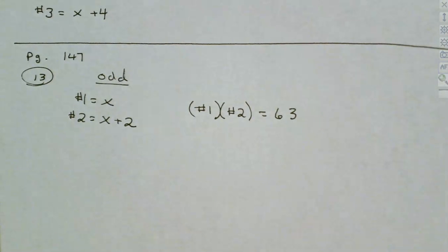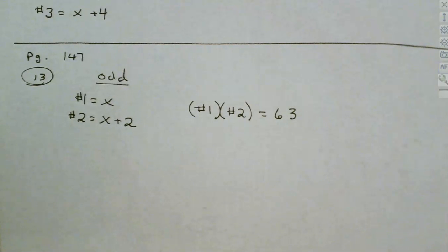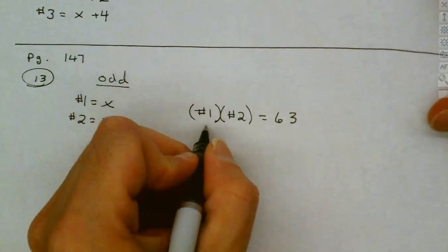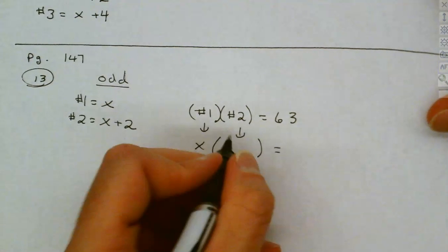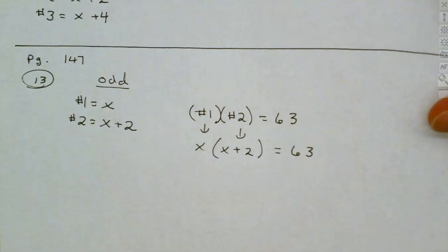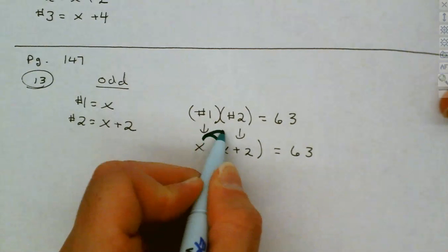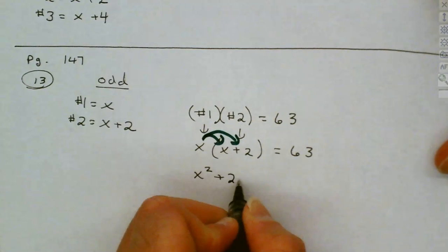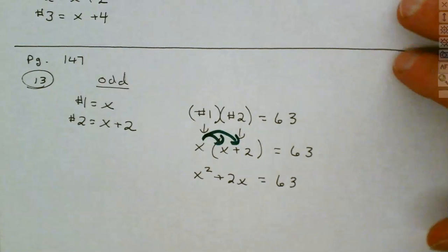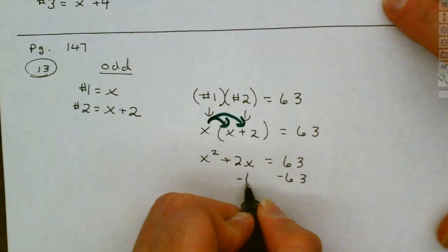The first number times the second number gives you 63. When we solve these, we're going to get two solutions — both are going to work. We're going to get a positive number and a negative number. Our first number is x, the second one is x plus 2, and that equals 63. We distribute through the x, and that gives you x squared plus 2x equals 63. Set it equal to 0, and these should factor out nicely.